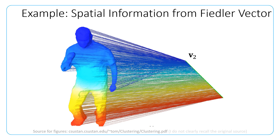In this example, the human figure consists of voxels, which are three-dimensional points. The figure shows the one-dimensional embedding obtained from the Fiedler vector v2. Colors indicate the correspondence between the three-dimensional voxels in the human figure and their one-dimensional embeddings.